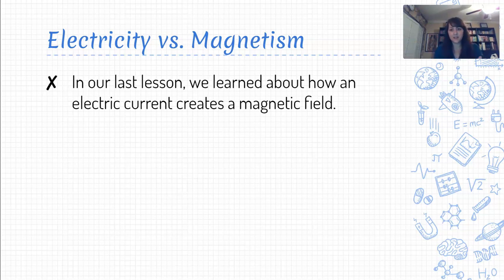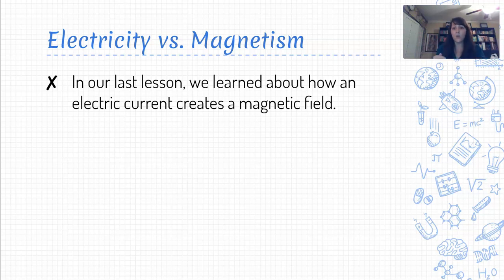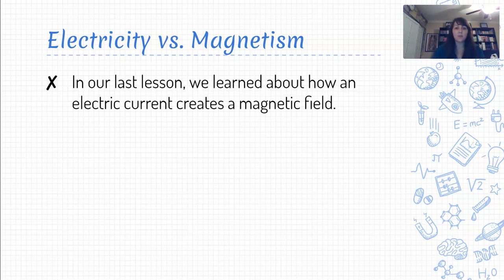Our first lesson in this magnetism unit was all about how we can create magnetic fields using electric currents. So even if we don't have a bar magnet or anything like that, all we have is a wire with a current running through it — that current is enough to create a magnetic field. So we talked about currents creating magnetic fields.